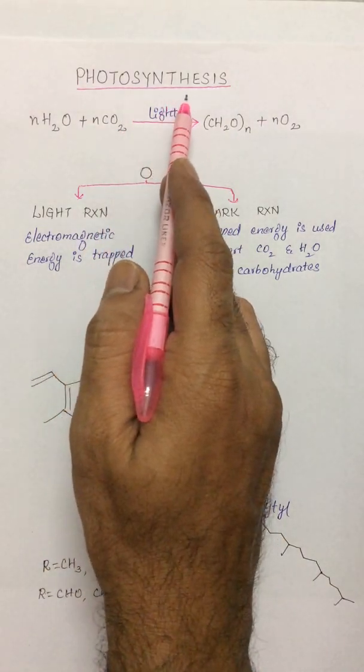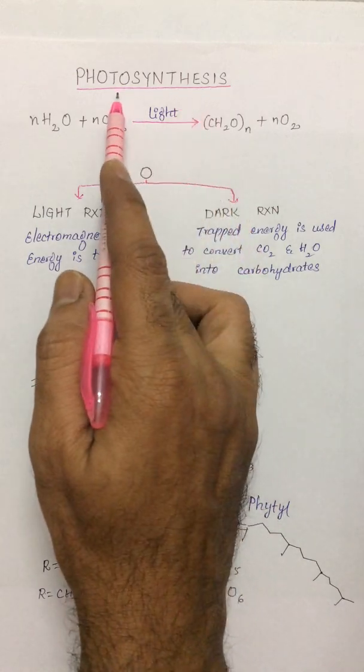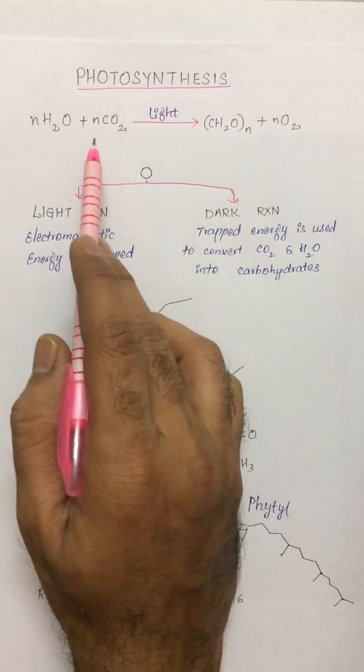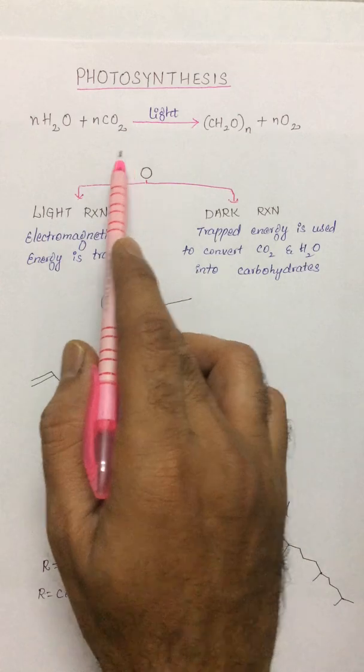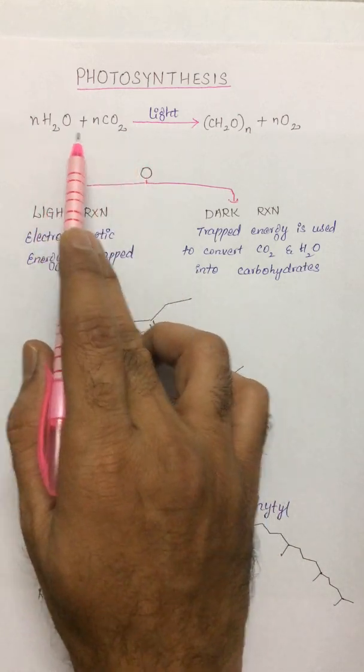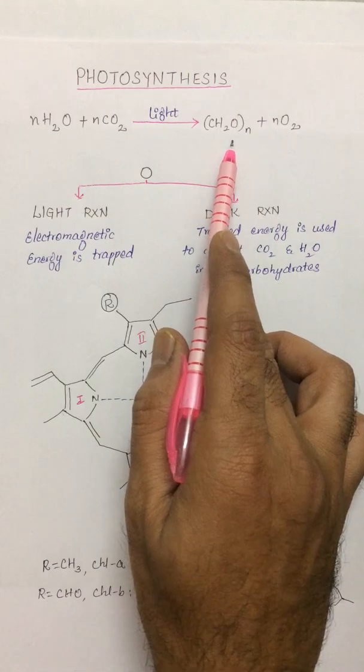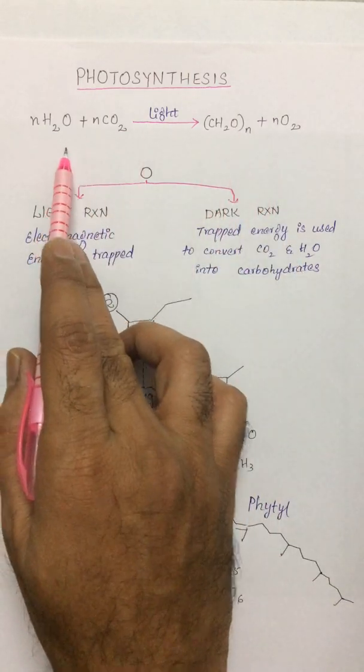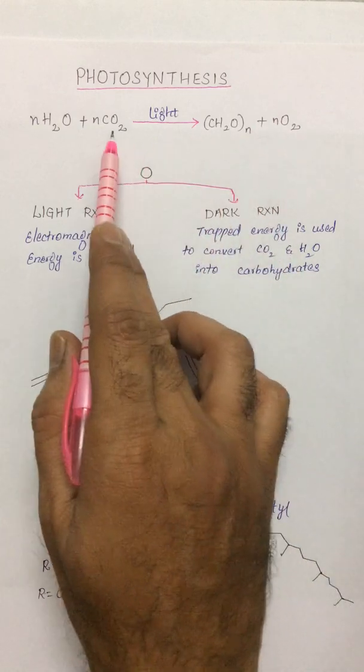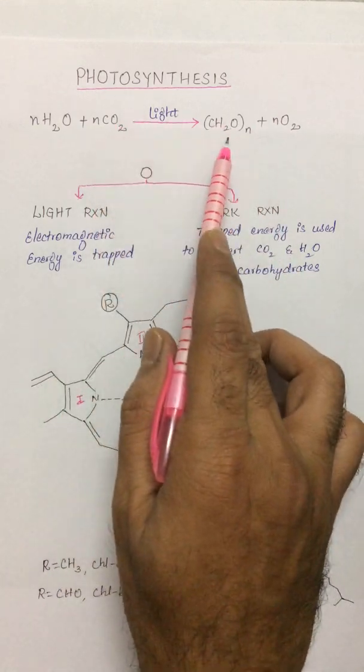Photosynthesis is the synthesis of carbohydrates in the presence of light. Chemically, we can give a simple equation where the water molecule and carbon dioxide in the presence of light react to give carbohydrates and oxygen. A water molecule is getting oxidized to oxygen, whereas the carbon dioxide is getting reduced to carbohydrates.